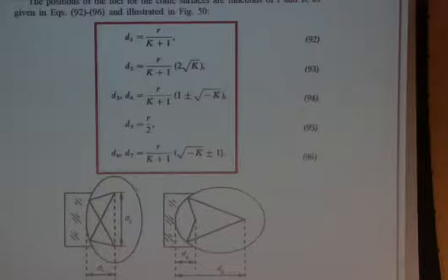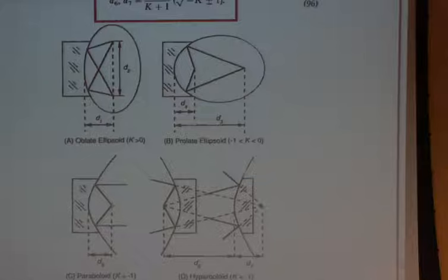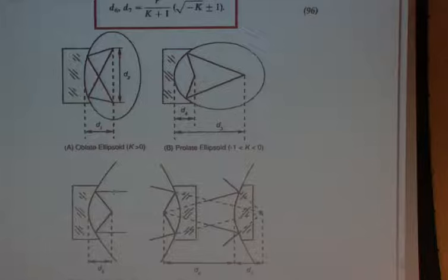There are some nice properties of the conics. We'll make a lot of use of this when we talk about testing of conics later in the course. For each of these conics there are going to be two foci. If I put a point source at one focus, the conic will image that at the other focus. For the paraboloid, if we put a point source at the focal point — which is the vertex radius of curvature over two — we'll have a perfect plane wave after reflection off the parabola.